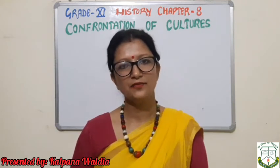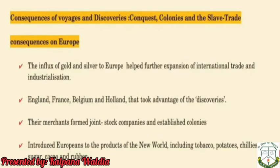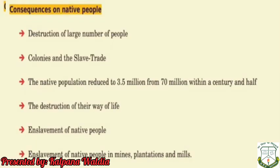Let us see the consequences of the great discoveries — conquest, colonies, and the slave trade. Consequences upon Europe: the influx of gold and silver to Europe helped further expansion of international trade and industrialization. England, France, Belgium, and Holland took advantage of the discoveries. Merchants formed joint stock companies and established colonies. Introduction of European products including tobacco, potato, chili, sugar, cocoa, and rubber all influenced a lot.